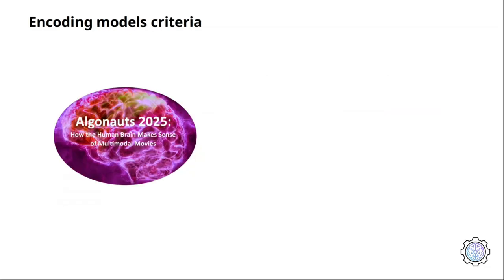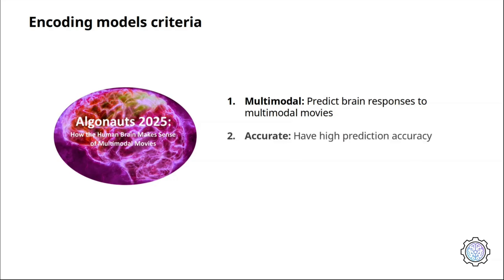Your encoding models should satisfy three criteria. First, they should predict brain responses to multimodal movie stimuli. Second, they should be as accurate as possible in making these predictions. And third, they should be robust and well generalized outside of their trained distribution.